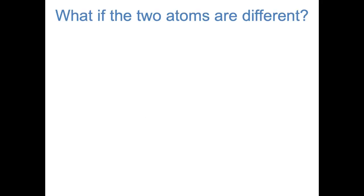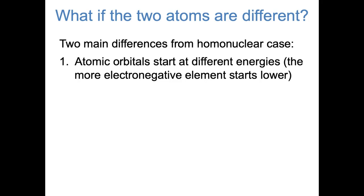In a heteronuclear diatomic molecule, most of what we learned in the previous video still applies. There are really only a couple of key differences that we need to keep in mind between homonuclear and heteronuclear diatomics. First, when the two atoms in the molecule are different from each other, their atomic orbitals start at different energies. Specifically, the more electronegative element starts lower in energy.